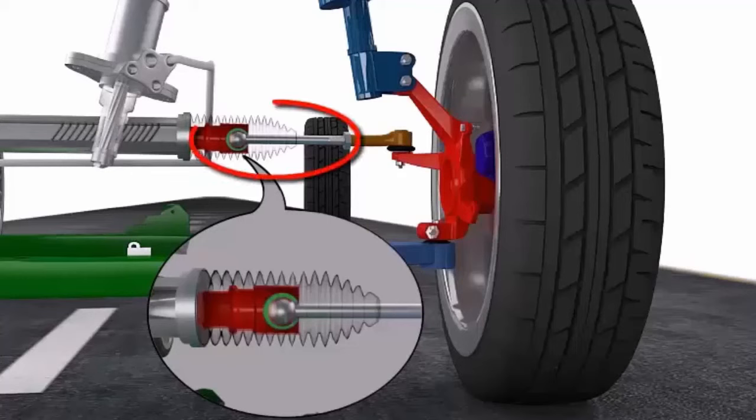The inner tie rod is usually a long metal rod with a ball joint on one end and threads on the other end.